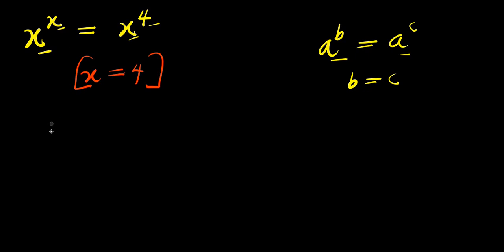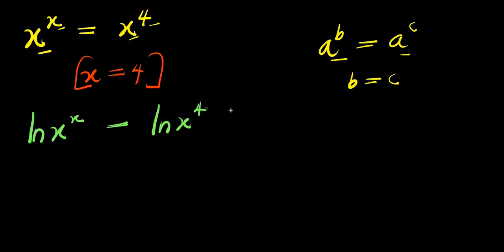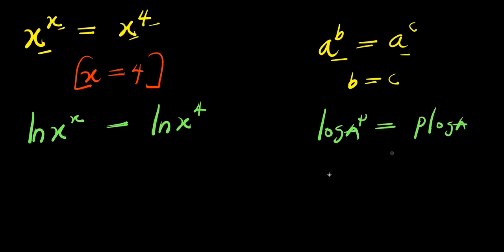In order to solve this and get all the solutions, we can make use of natural log. Take the natural log of x to the power of x equals the natural log of x to the power of 4. Consider this identity: the natural log of a to the power of b equals b times the natural log of a.